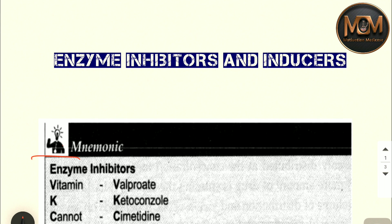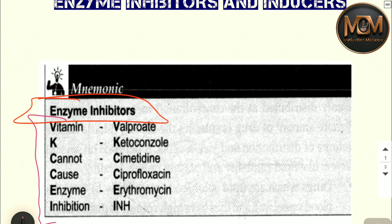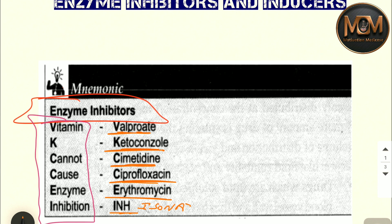The first mnemonic is for enzyme inhibitors. You have to remember: 'Vitamin K Cannot Cause Enzyme Inhibition.' From V it is Valproate, from K it is Ketoconazole, from C it is Cimetidine, from another C it is Ciprofloxacin, from E it is Erythromycin, and from I it is Isoniazid. These are the enzyme inhibitors.